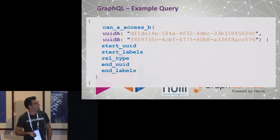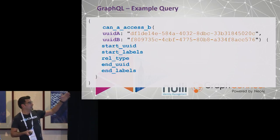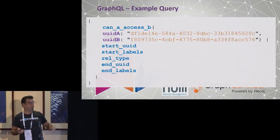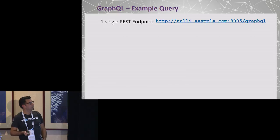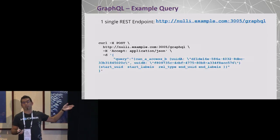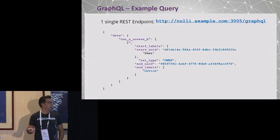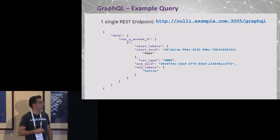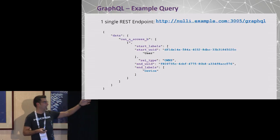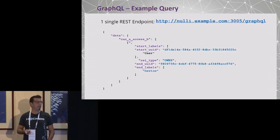At runtime, you package the query and run it through your one single REST endpoint. The result comes back — in this case, one row in the response because it was a simple relationship — but it's an array of relationships, so you can have several, and that defines a path.